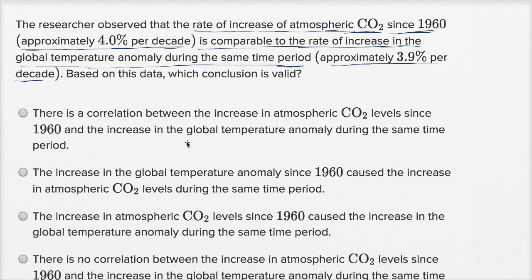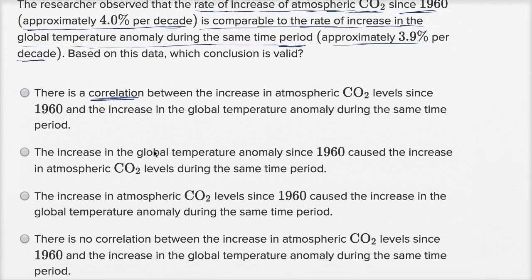That's what correlation tells us. It doesn't mean that necessarily the CO2 levels are causing the temperature to increase or that the temperature increase is causing the CO2 levels to increase. It's just saying that over this time, we're seeing that these two things are moving together, which is what correlation is talking about. How much do these data points move together? I'm liking this one. Actually, let me read all of them before I pick that choice.